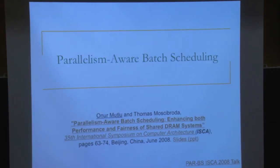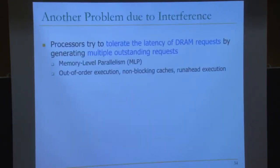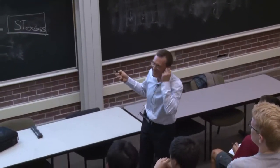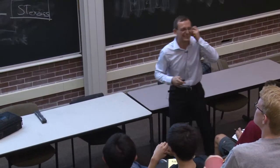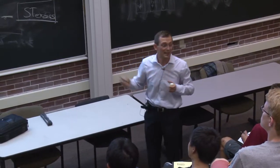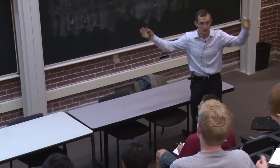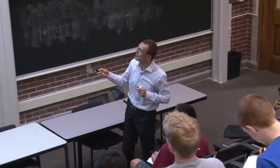The next work is ParBS — parallelism-aware batch scheduling — which is simpler. Processors tolerate memory latency by generating many requests in parallel to overlap their latencies: memory level parallelism. This requires out-of-order execution and non-blocking caches to support it. This is effective only if the DRAM system actually services those requests in parallel. Even if requests go to different banks, they may get serialized because multiple threads share the DRAM controller — DRAM controllers are not aware of a thread's MLP.